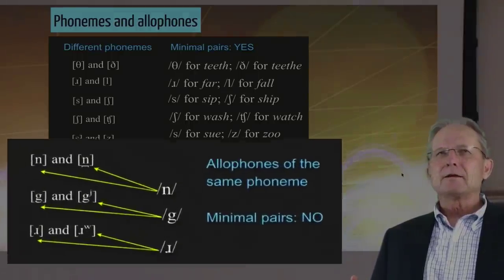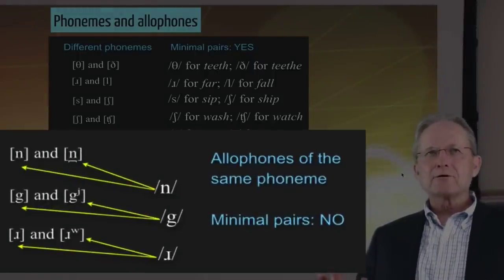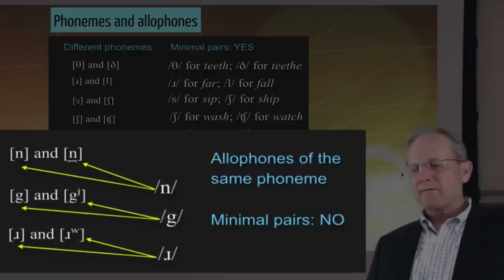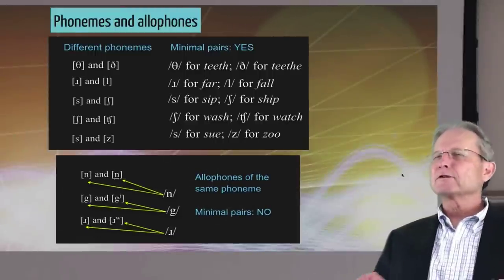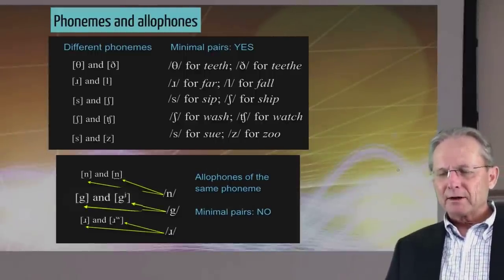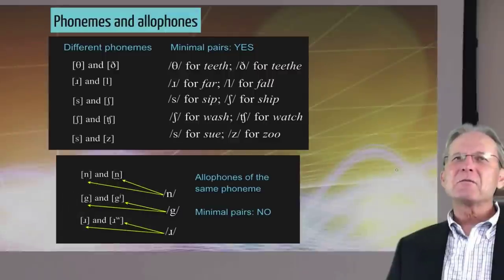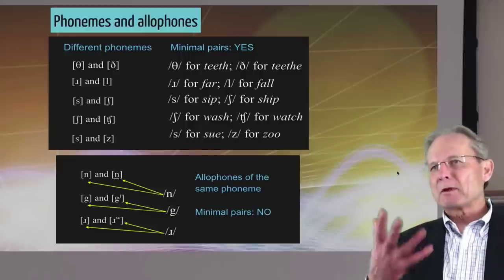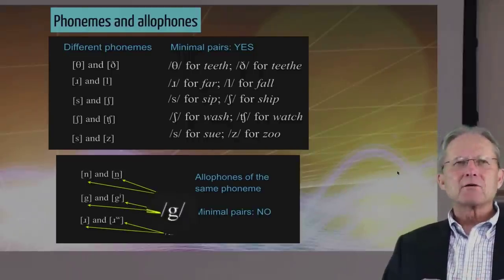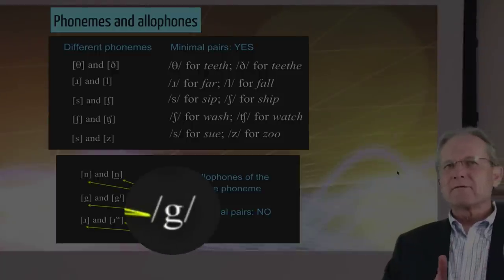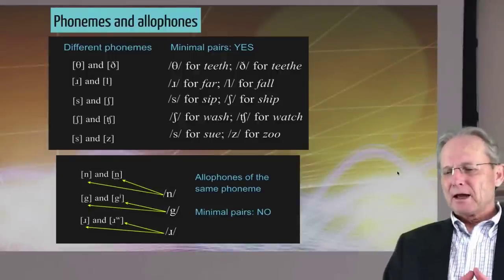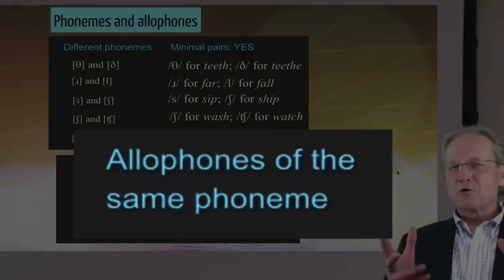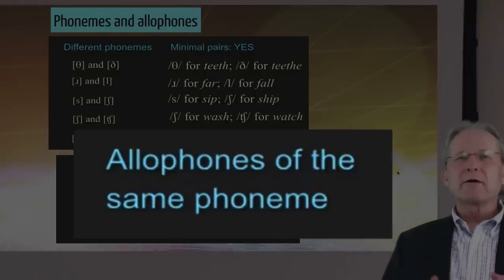Alveolar n and dental n are different versions of the same basic category. When there are minimal pairs — like 'teeth' and 'teethe,' 'far' and 'fall,' 'sip' and 'ship' — we know those sounds are different phonemes. But in cases like the two versions of g, if you say them out of context you can hear there's a difference, but it won't make any difference in the language — people don't even perceive it. Those are different versions of g, and the same goes for the two versions of r. Those are said to be allophones, or predictable contextual variants of the same sound.